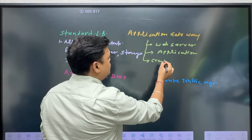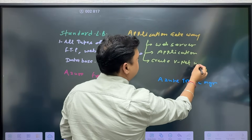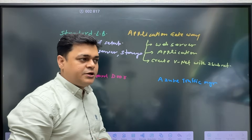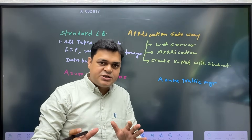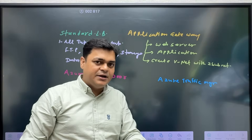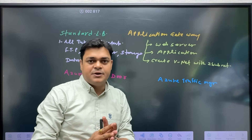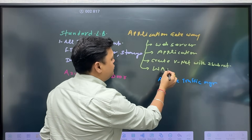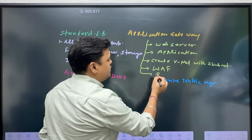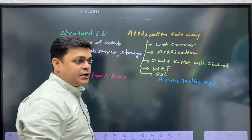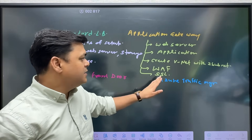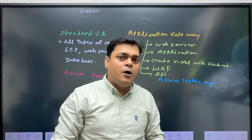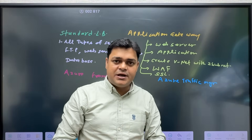An important point for application gateway: you need to create a VNet with two subnets. We cannot create our application gateway using the default subnet alone — you must add a minimum of two subnets in the default VNet to establish the application gateway. Additionally, it provides WAF (Web Application Firewall) and also gives us the option to configure SSL (Secure Socket Layer), meaning HTTPS. WAF is a built-in feature of application gateway that helps enhance the productivity of your web servers in the backend.